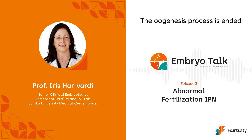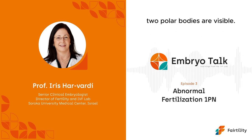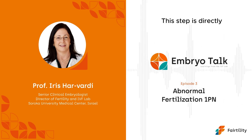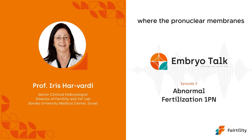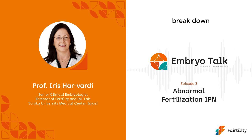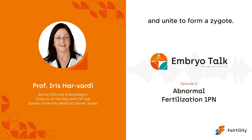The oogenesis process is ended when two pronuclei and two polar bodies are visible. This step is directly followed by the process of syngamy, where the pronuclear membranes break down and the paternal and maternal chromosomes reorganize and unite to form a zygote.